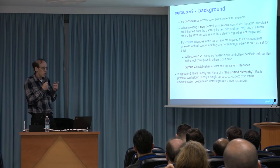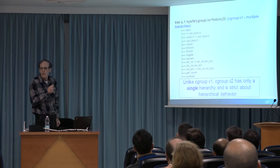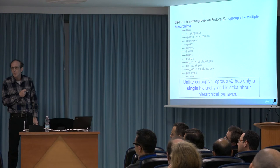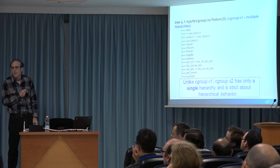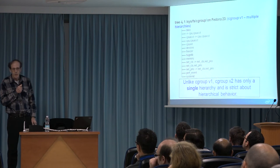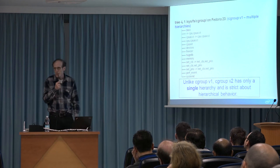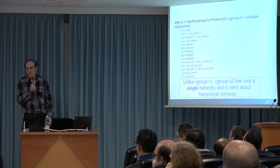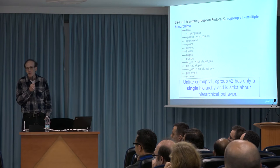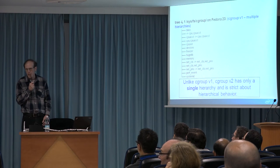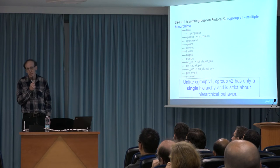In Cgroup V2, there is only one Cgroup root object and each process can belong to only one group. If a new subsystem in the kernel starts developing Cgroups now, they would be recommended to do it for V2 only. I believe that the Cgroup V2 maintainers would not agree to merge any patch that is not for Cgroup V2.